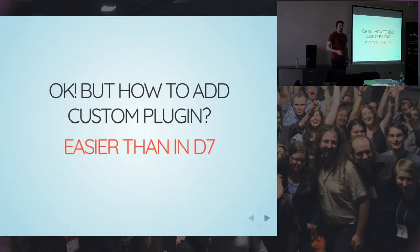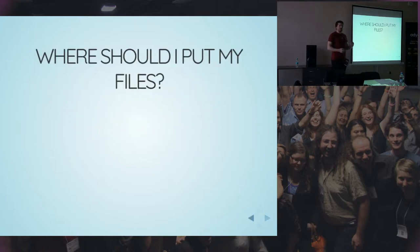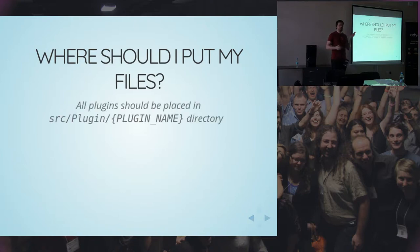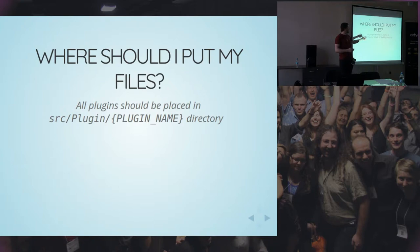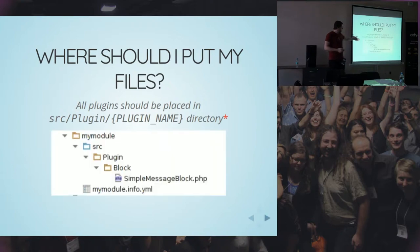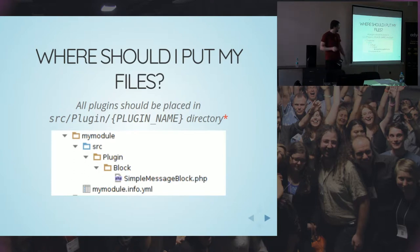Как добавлять кастомные плагины? Все мы пишем код, и это на самом деле проще, чем в семёрке. Всё кидается в src/Plugin/название нашего плагина — тип нашего плагина директория. Если это блок, то это будет src/Plugin/Block, если это action — то src/Plugin/Action. Для блока из примера с предыдущего слайда: src/Plugin/Block и наш класс — всё по стандартам Drupal 8.